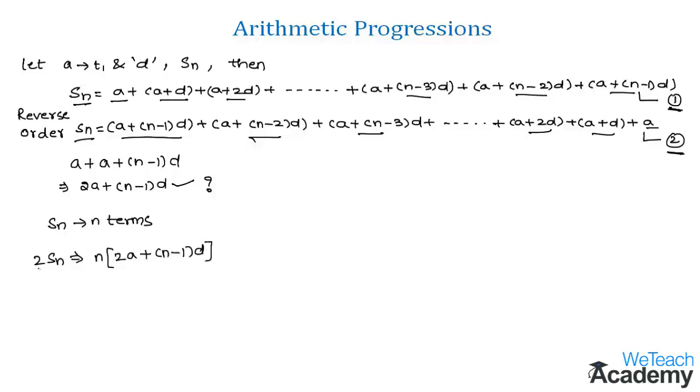Now let us transfer 2 to the right hand side. So we get the sum of n terms as Sn equals n over 2 into 2a plus n minus 1 into d. So this is the formula to find the sum of first n terms of an arithmetic progression.